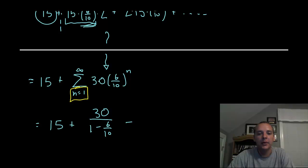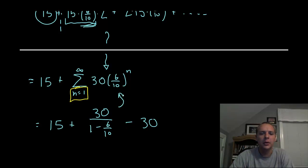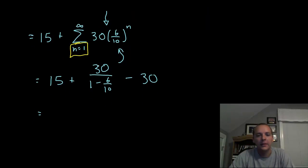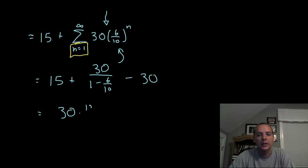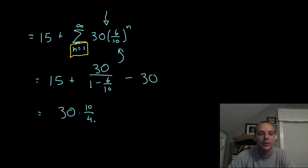If n equals zero, thirty times six-tenths to the zero power is thirty. So I remove that from the sum so it equals this series. Now for the algebra: one minus six-tenths is four-tenths, so we have thirty divided by four-tenths — or equivalently, thirty times ten over four, multiplying by the reciprocal, which is a common algebra procedure. Then fifteen minus thirty gives minus fifteen.